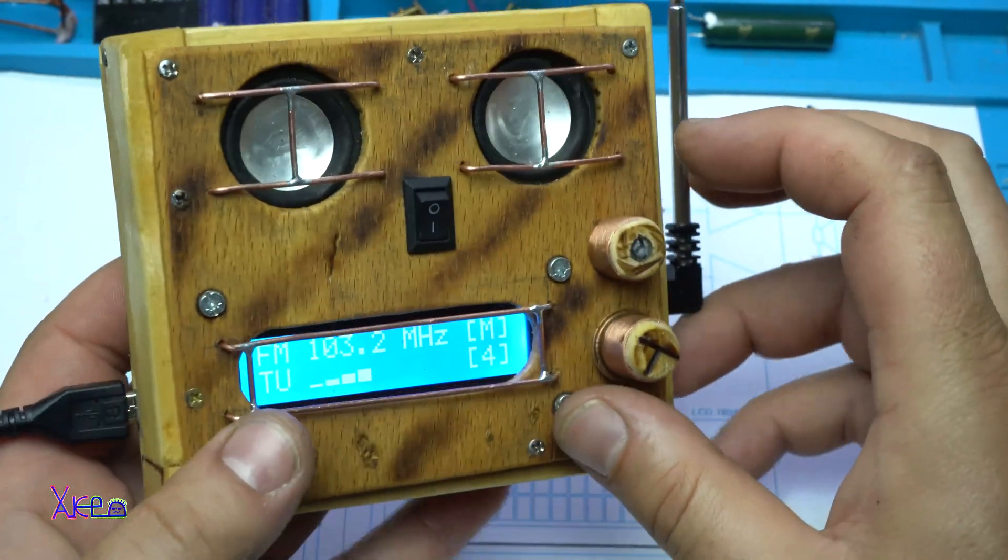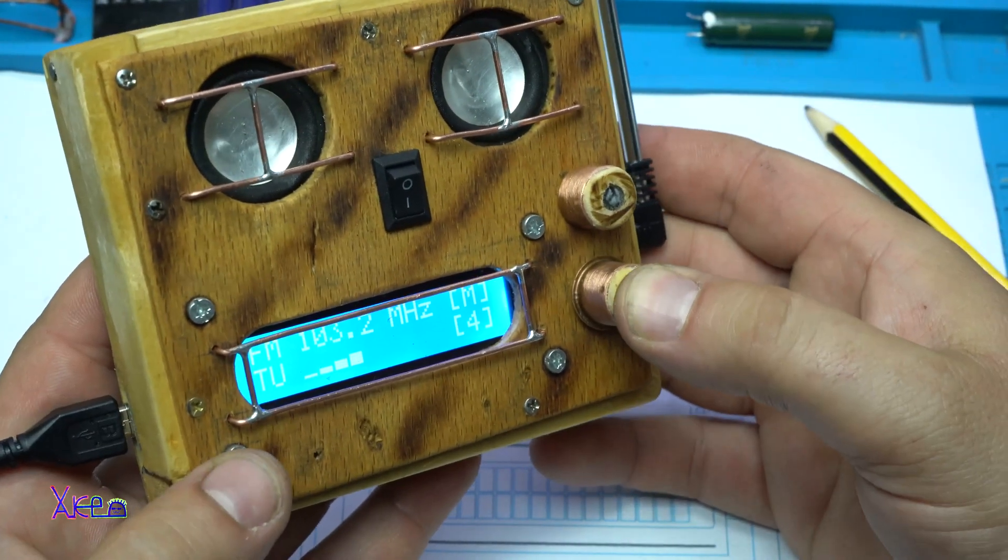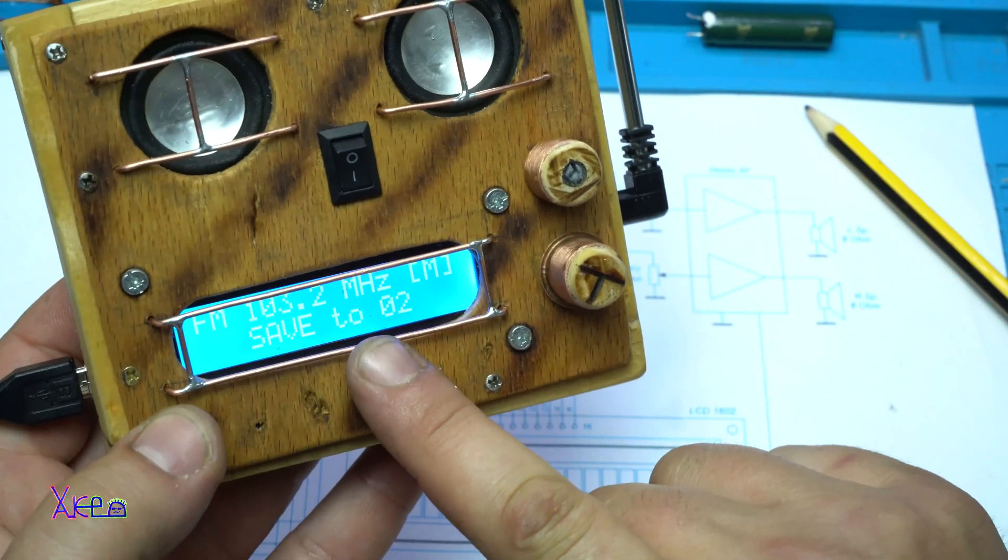And when you find a good reception of the radio, just press the rotary encoder and save to number 2.